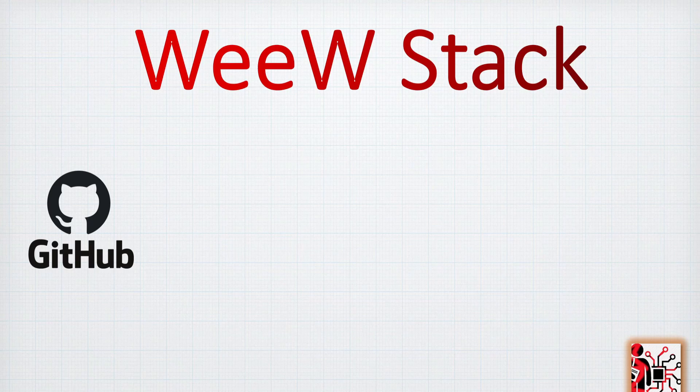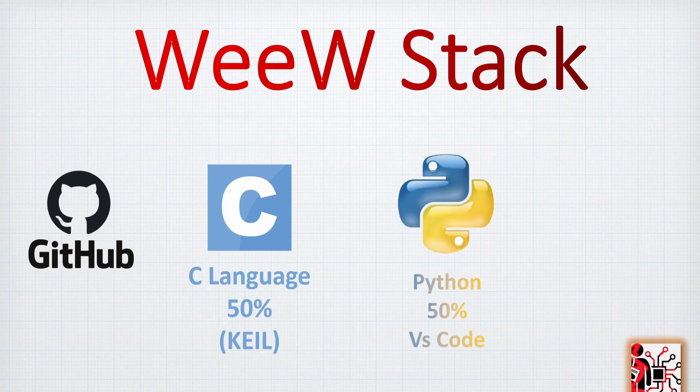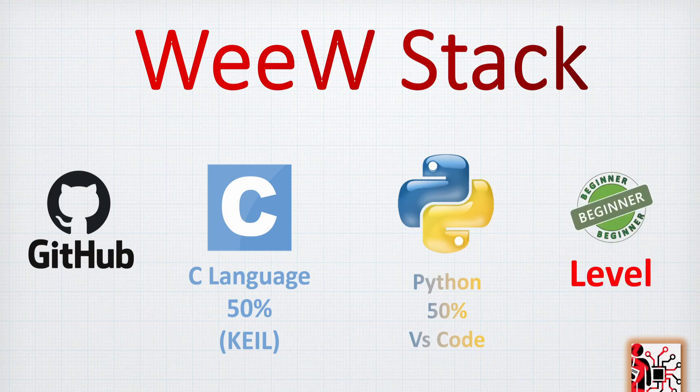As usual, the code we are going to share today is available on GitHub. 50% of the code will be in C language, programmed in Keil. The other 50% will be Python and the editor will be VS Code. The level is quite beginner, as you just have to copy-paste the code and understand what the functions are doing.